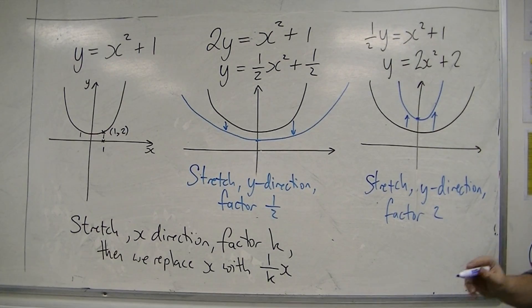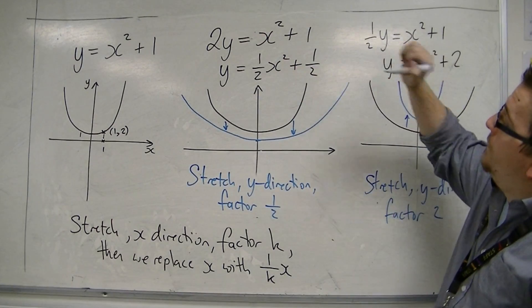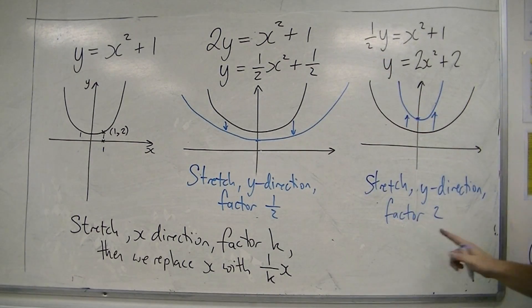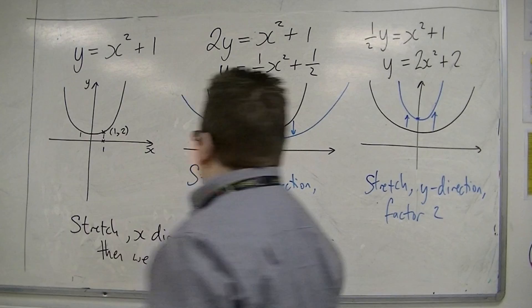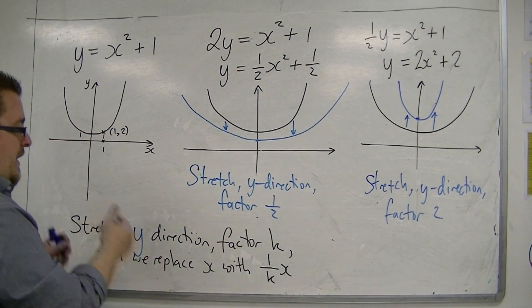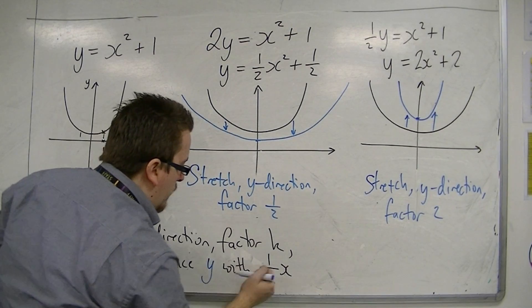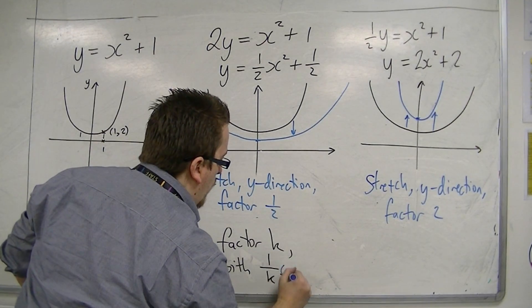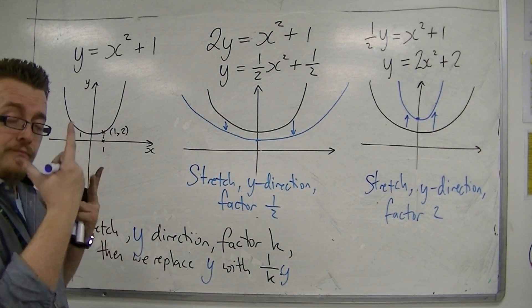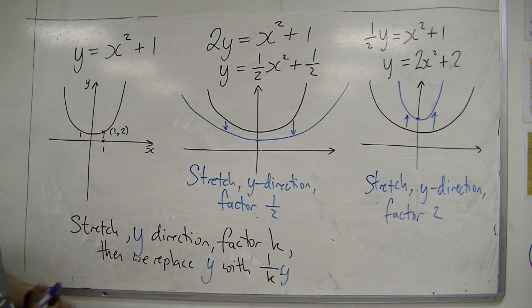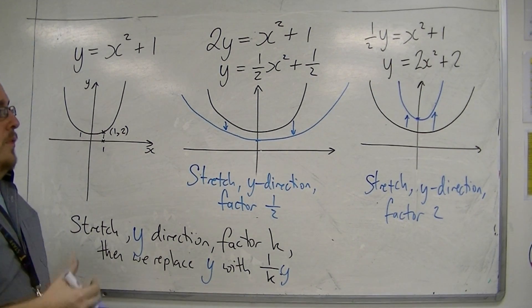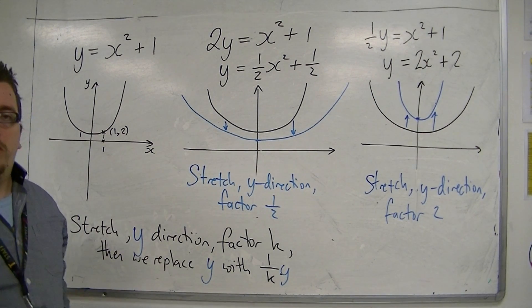We can see that once again, we replace with two y, it's a factor of a half. We replace with one-half y, it's a factor of two. If we stretch in the y-direction by a factor of k, then we replace the y with one over k y. It's exactly the same process, but in this case we're looking at the y's rather than the x's. That is stretching in a nutshell.